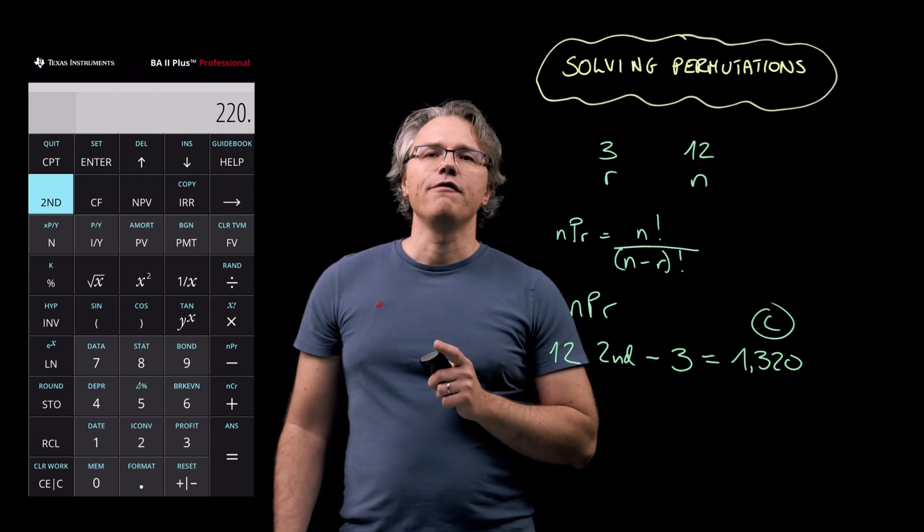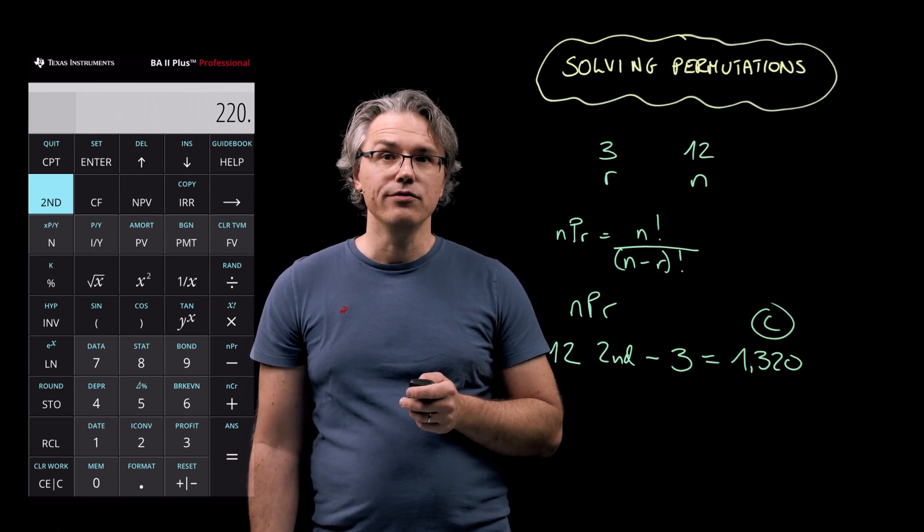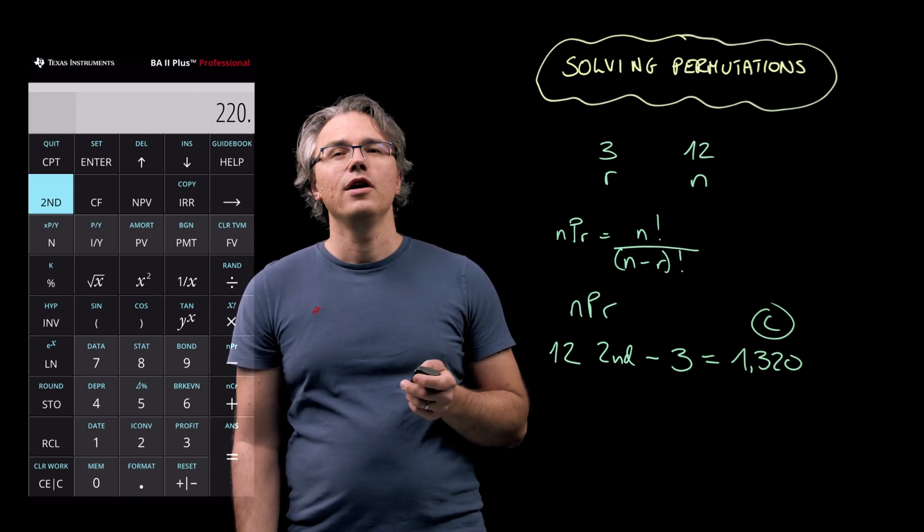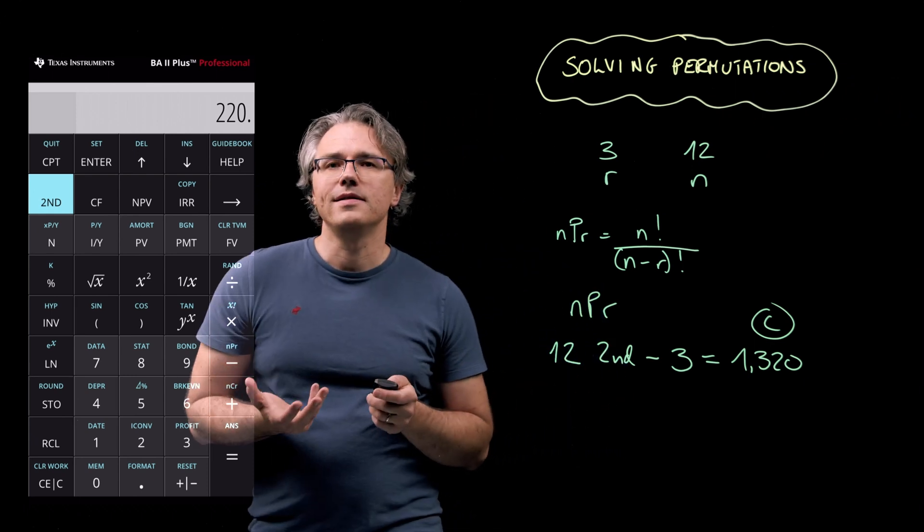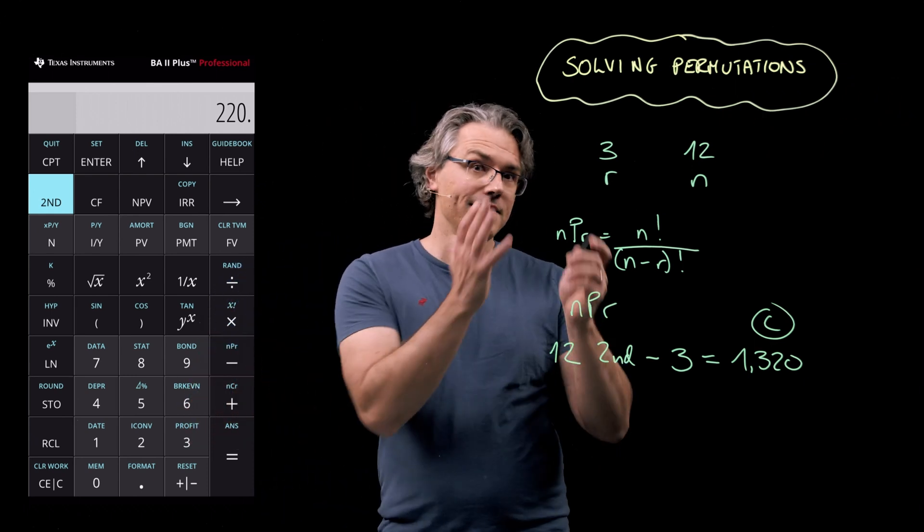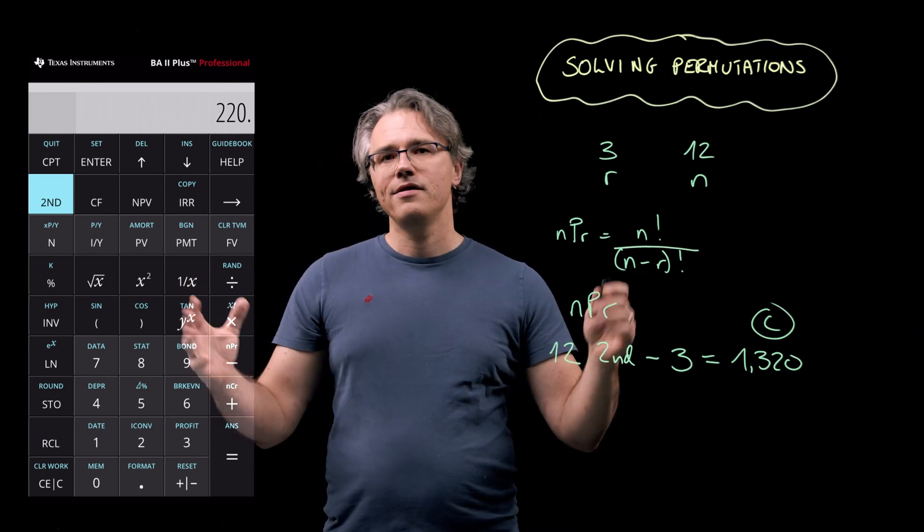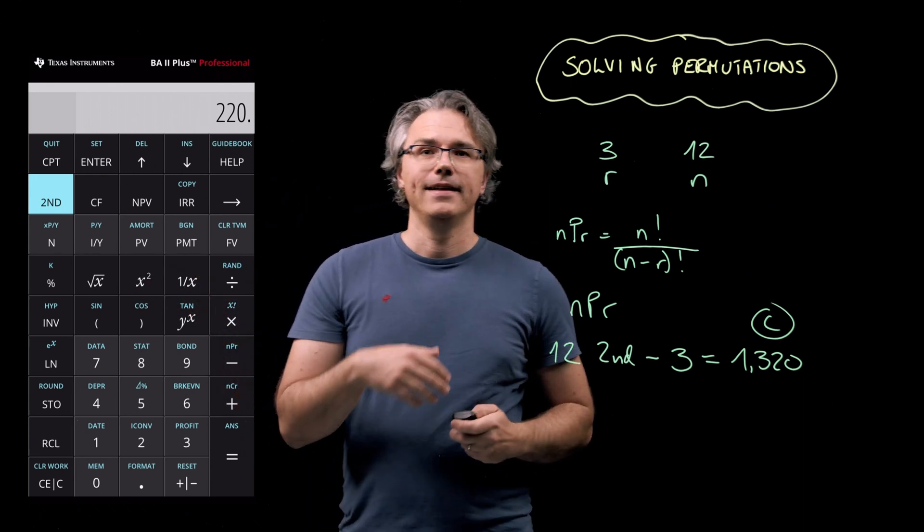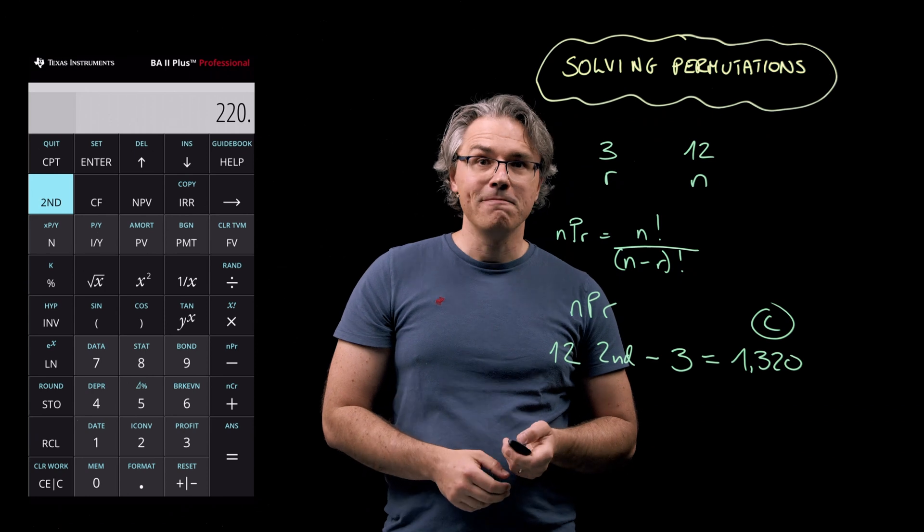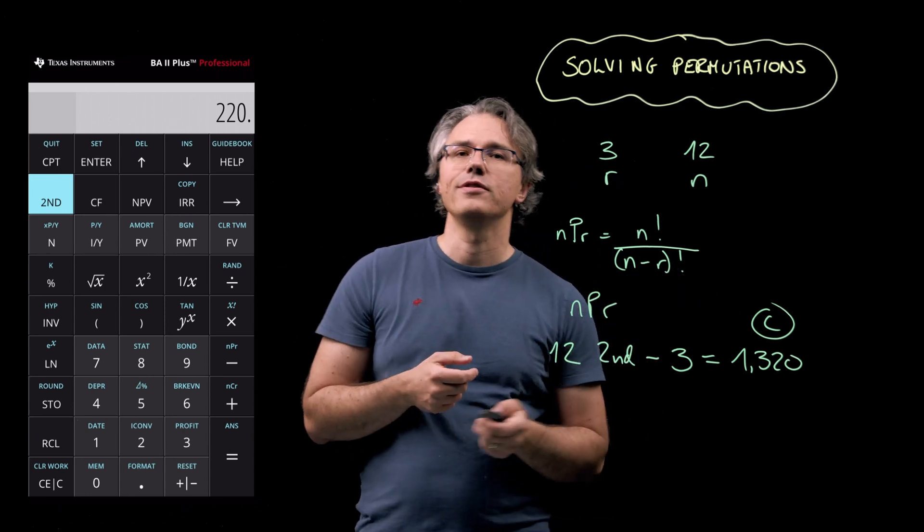So in the exam, if you're not sure which formula is the correct one to use, permutation or combination, use simple logic. If the order in which the stocks are listed is important, as is the case over here in this question, you will always get a higher number of outcomes than when the order is irrelevant. So in this scenario, simply pick the higher number, 1,320.